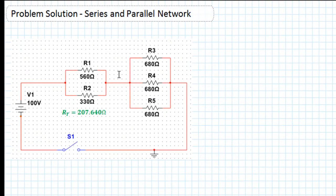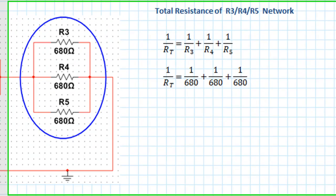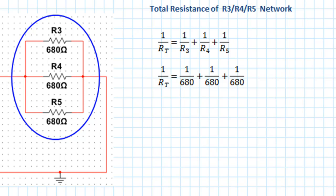Now we've worked out the effective resistance of the first part of the network — RT = 207.640 ohms. We can move on to the next part of the network, and again this is resistors in parallel so we use the same formula: 1/RT = 1/R3 + 1/R4 + 1/R5. Substituting in the values we get 1/680 + 1/680 + 1/680.